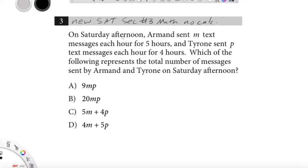Okay, on Saturday afternoon, Armand sent M text messages each hour for five hours, and Tyrone sent P text messages each hour for four hours. Which of the following represents the total number of messages sent by Armand and Tyrone on Saturday afternoon.